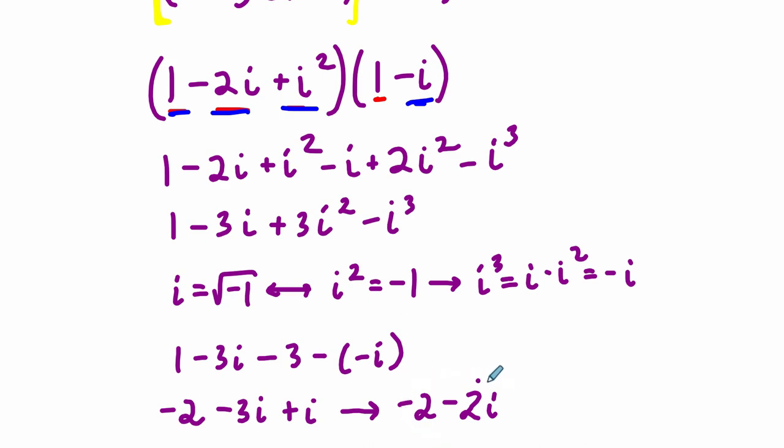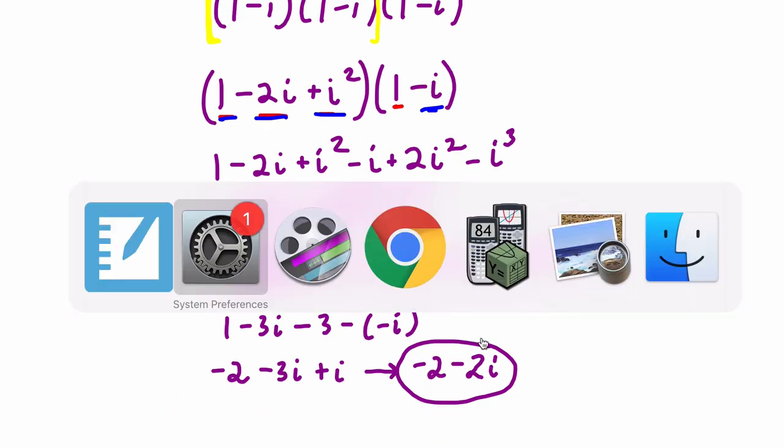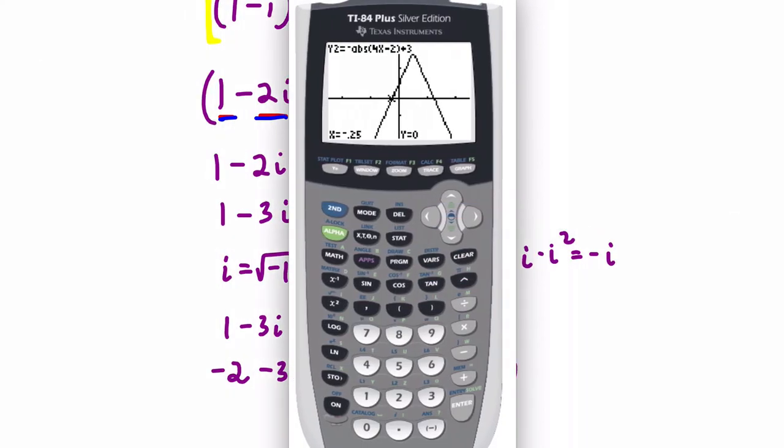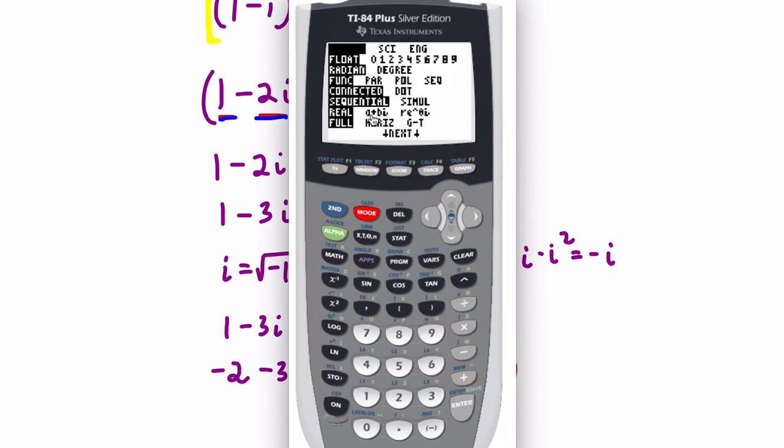Now, the nice thing about this problem is that you can actually check it on a calculator. Let me show you. If you have a graphing calculator, Texas Instruments, you can press Mode. Down here there's real a plus bi, which is what we're looking for. It's complex form. So we hit Enter.